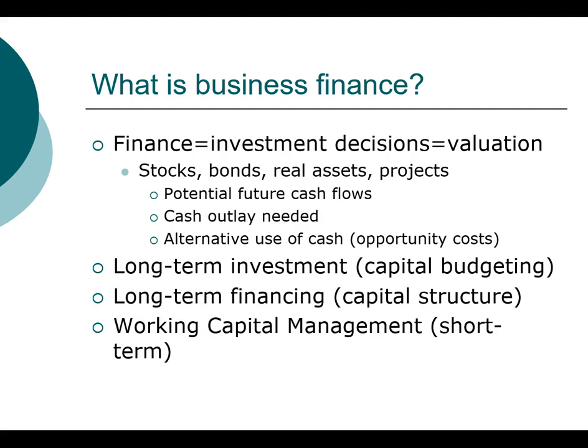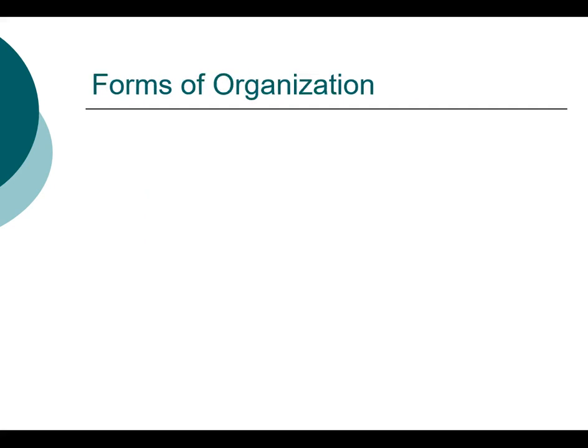Before we go into the detailed finance content, it's important to have a brief overview of the different forms of business organizations. The most common and popular form is sole proprietorship. Sole proprietorships are the easiest and most simple — they are the largest in number but the smallest by size in the United States. By definition, a sole proprietorship can have only one owner, and therefore its size is inherently restricted.